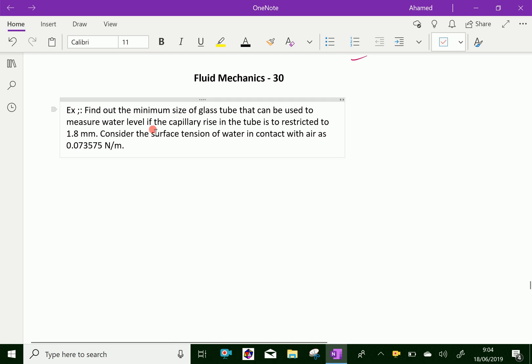Example: Find out the minimum size of glass tube that can be used to measure water level if the capillary rise in the tube is restricted to 1.8 mm. Consider the surface tension of water in contact with air as 0.073575 newton per meter.